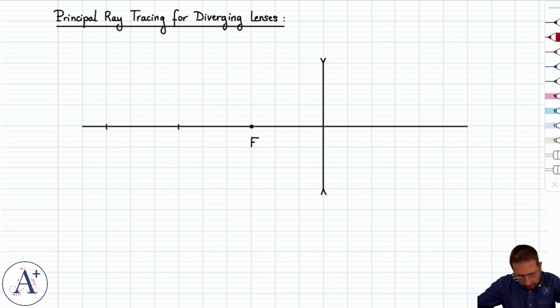So let's take an object here and let's place it in front of our diverging lens, this is AB, and let's do ray tracing.